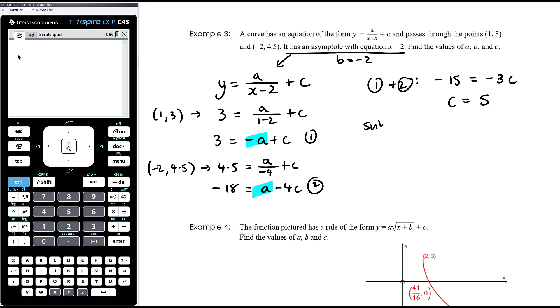And then we can substitute, we might go into equation 1, we're going to get 3 equals negative a plus 5, so negative 2 is negative a, so a equals 2. And so therefore, find the values of a, b, and c: a equals 2, b equals negative 2, that's from the asymptote, and c equals 5.